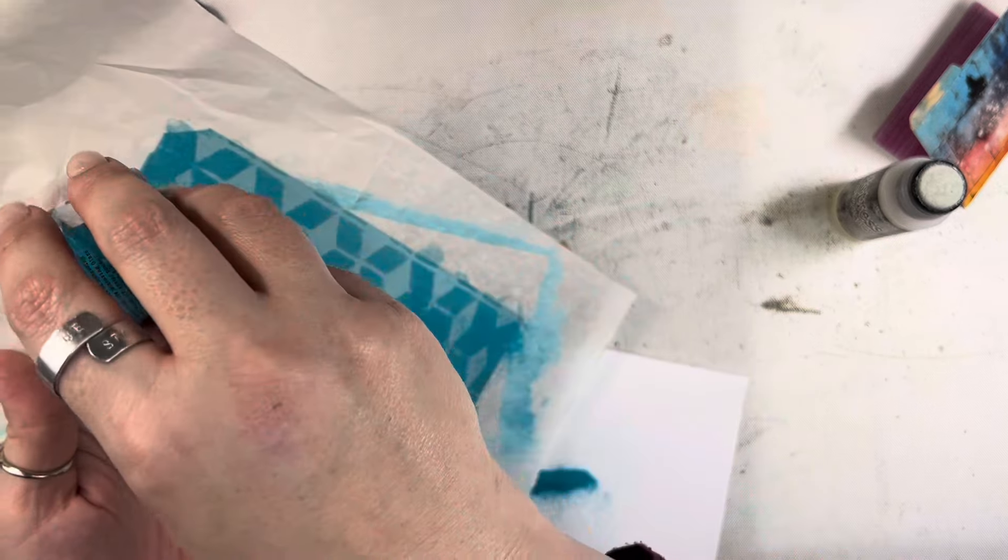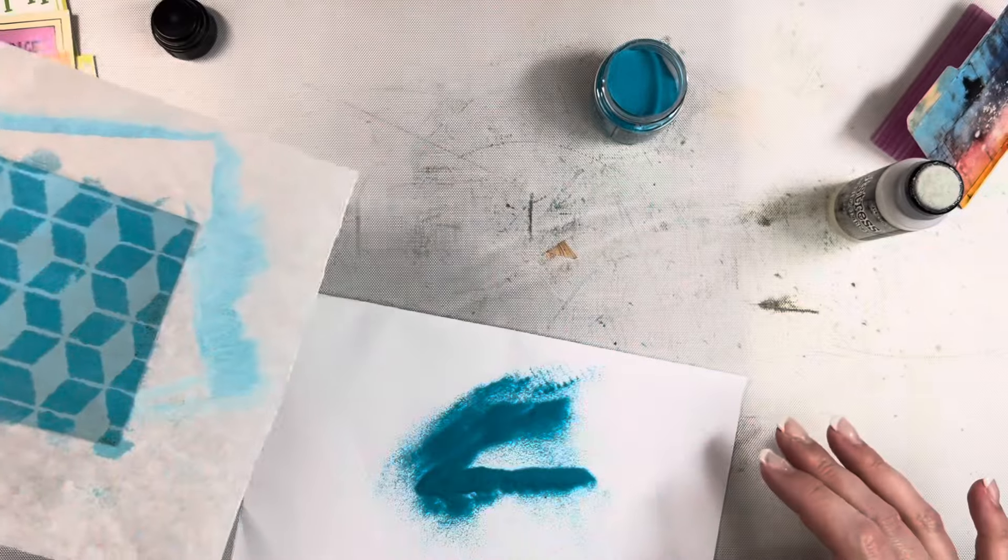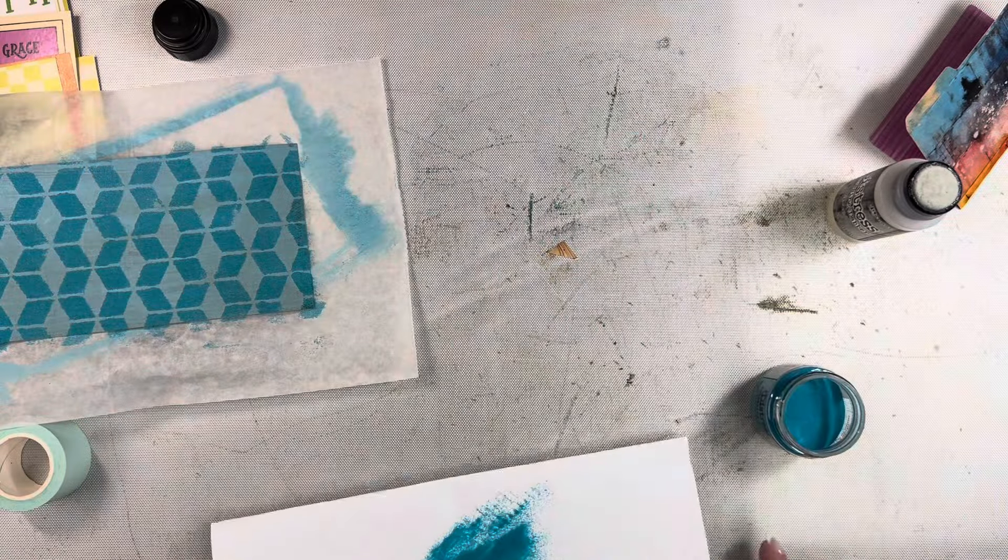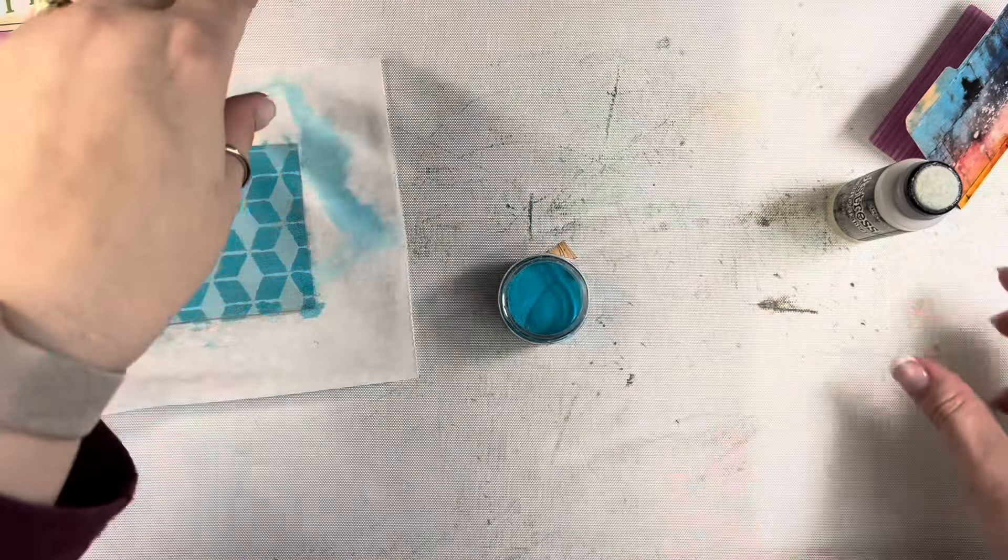So there she goes, and then she'll take the little heat gun and melt all those things down and they'll be really shiny, nice little pattern.